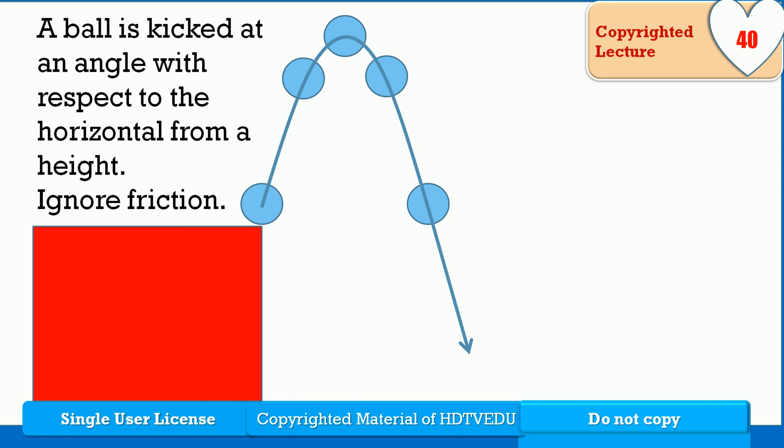A ball is kicked at an angle with respect to the horizontal from a height. That is not linear motion.